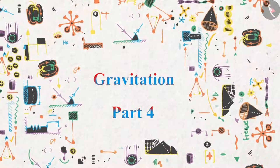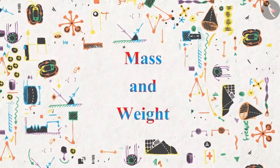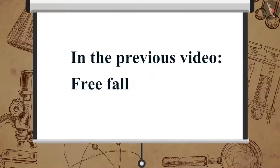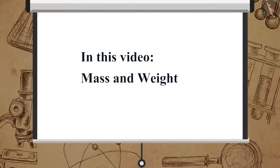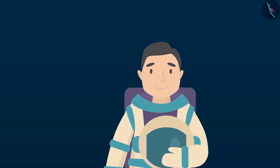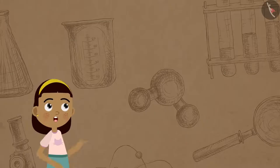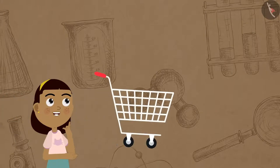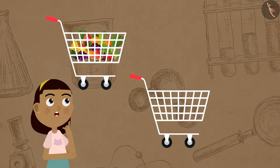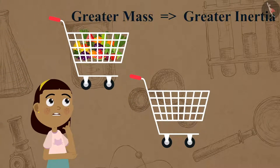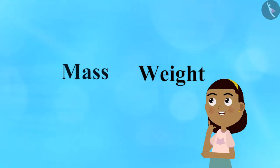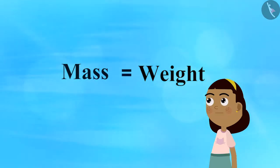Gravitation part 4: mass and weight. In the previous video we learned about freefall. In this video we will learn about mass and weight. Mass and weight are often confused as the same thing, but they are absolutely not. Remember, the mass of an object is the measure of its inertia, and greater mass offers greater inertia. Now let's understand more about mass and how it is related to weight, but is not the same as weight.